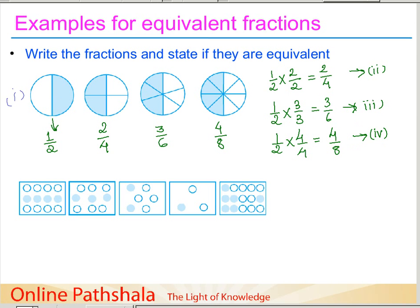Just for your recollection: we can get an equivalent fraction for a given fraction by multiplying the numerator and denominator by the same number. So that is how we proved it. Now let us have a look at the second example.